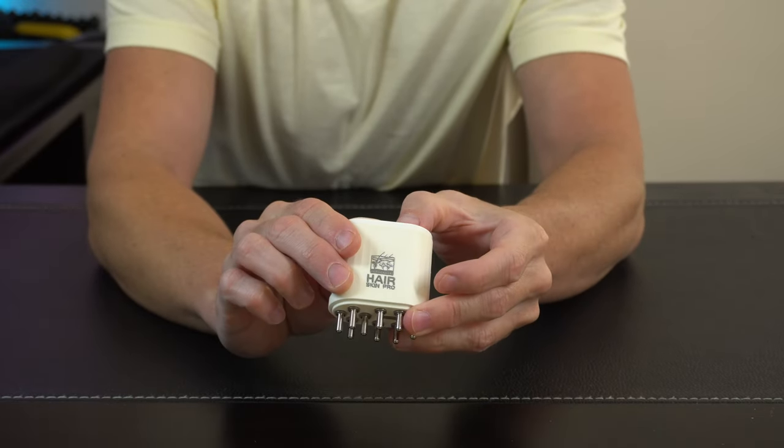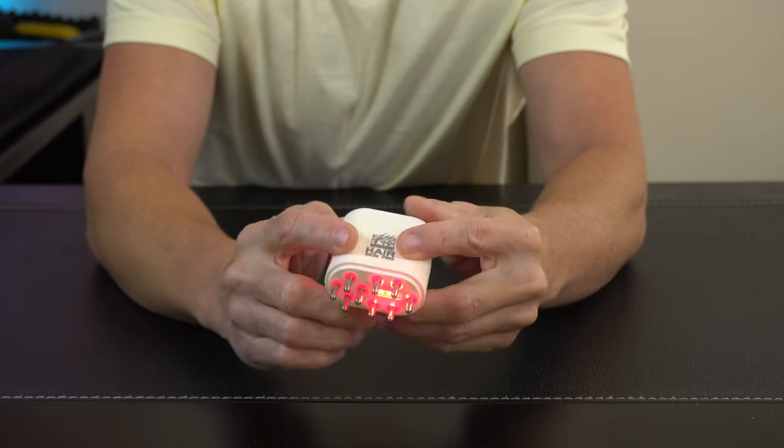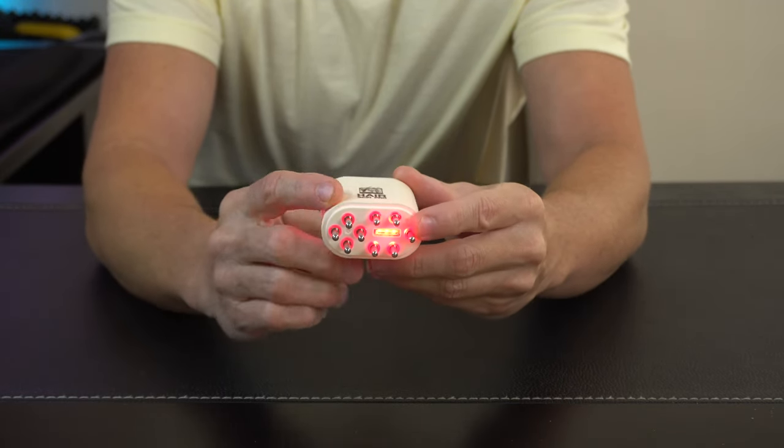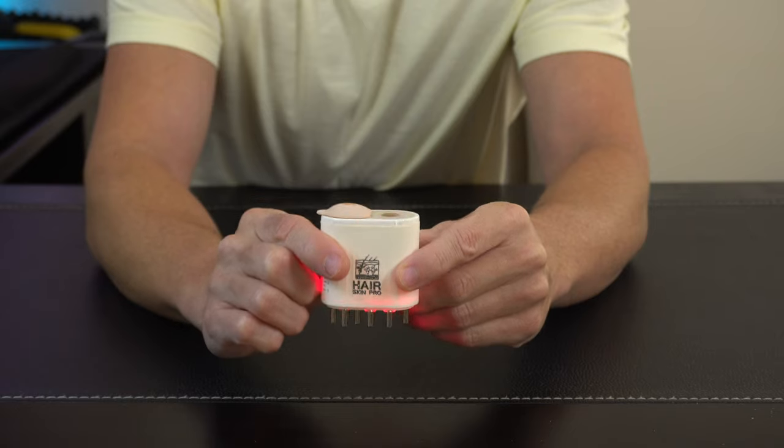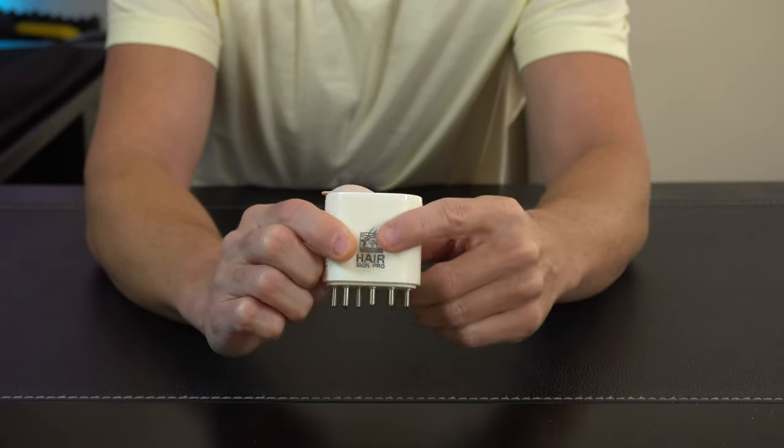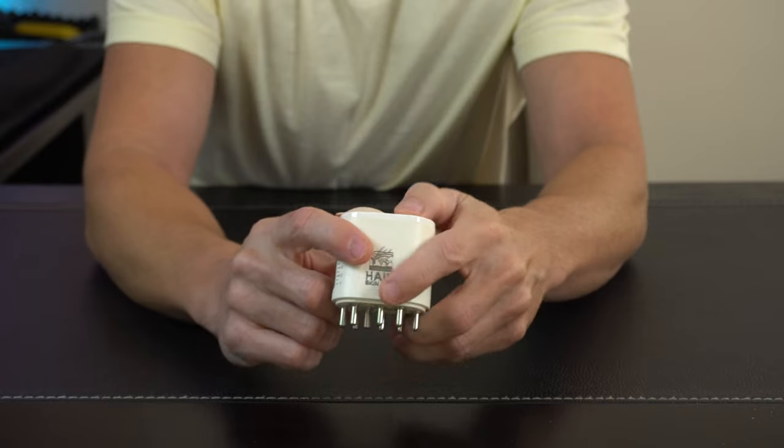Press this down just for a second. It's going to turn on and it starts to vibrate. It actually has some red LEDs on the bottom side here, which is always good for scalp therapy. You can press the button one more time. The light turns off, but it still continues to vibrate.